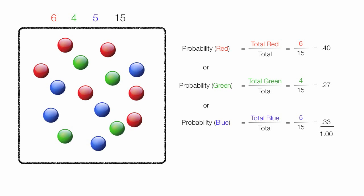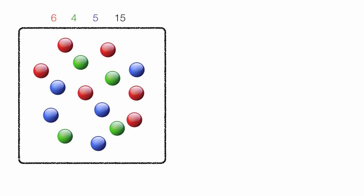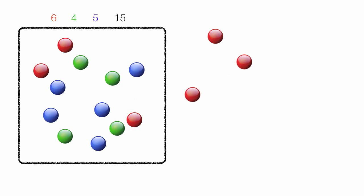In this example, I calculated the probability of picking a red marble, or a green marble, or a blue marble. In the next example, I'll change it up just a little bit. What is the probability of picking a red marble, and then another red marble, and then another red marble — or what is the probability of picking 3 red marbles in a row?